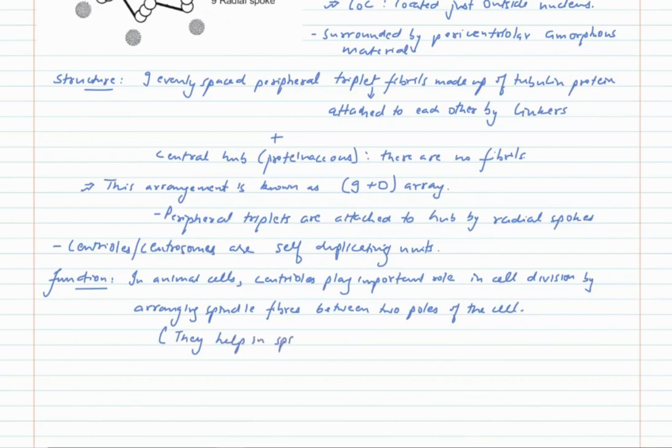The other function is that they form the basal body of cilia and flagella. Cilia and flagella have a nine plus two arrangement, whereas the basal body from which they arise has a nine plus zero array because it is made up of centrioles.